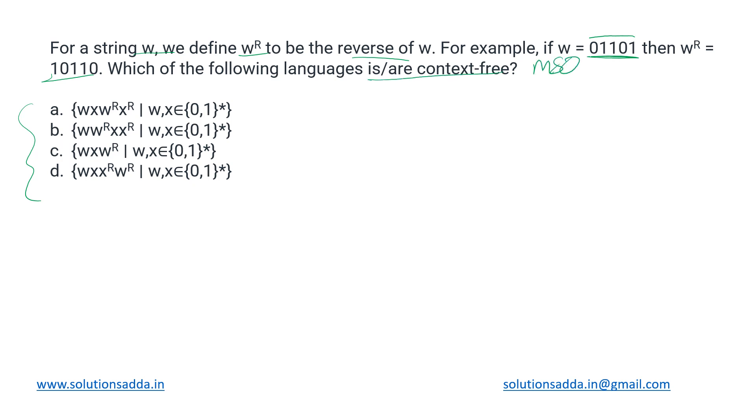Let's look at the first option: it is wx^n w^r x^r, where w and x are both given to be in {0,1}*. So they can be a null string or any number of zeros or ones combined. Now looking at this string, we are basically having w here and its reverse here, x here and its reverse over here.